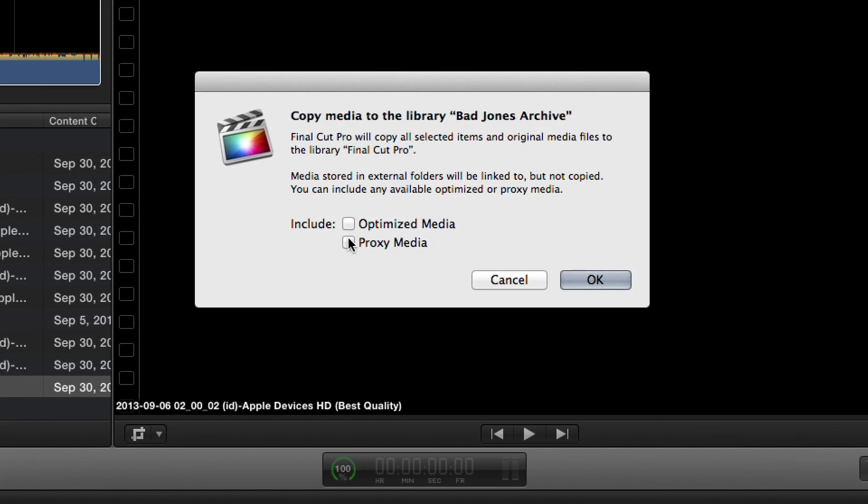So if you uncheck these, this could be a huge amount of data. Because, for instance, if you optimize red raw media, it makes a file about three times the size of the original. So by unchecking these, you could make your archive well under half the size of the original library.